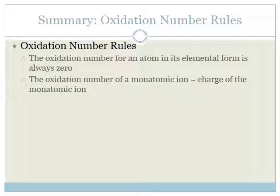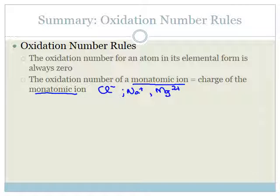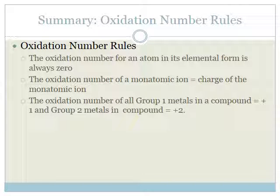The oxidation number of a monoatomic ion is equal to the charge of that monoatomic ion. So chloride ion is minus one, sodium ion is plus one, and magnesium ion is two plus. The oxidation number of all group 1 metals in a compound is always plus one, and group 2 metals is always plus two — this is consistent with the rule that a monoatomic ion's oxidation number equals its charge.